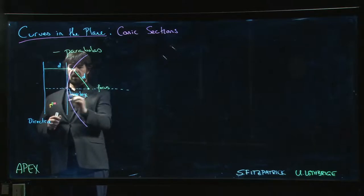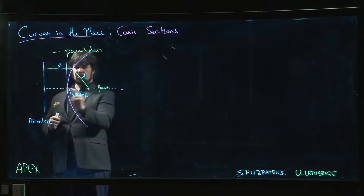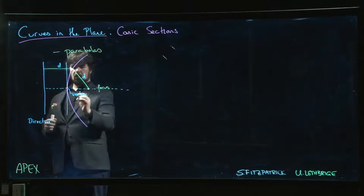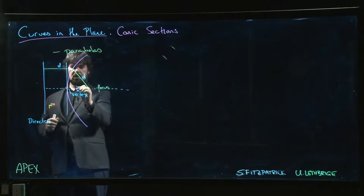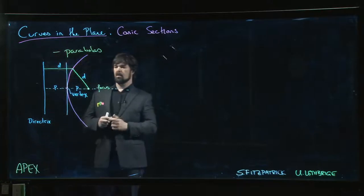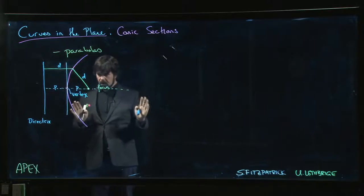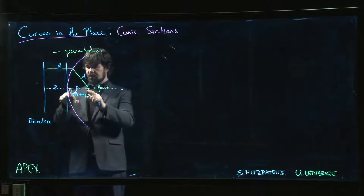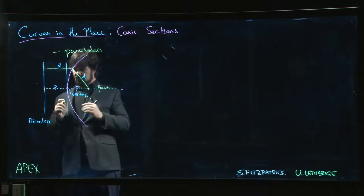And so the vertex is going to be this point that is sort of directly between the focus and the directrix. And there is some distance there, which we might call P. The distance between the focus and the vertex and the distance between the directrix and the vertex.